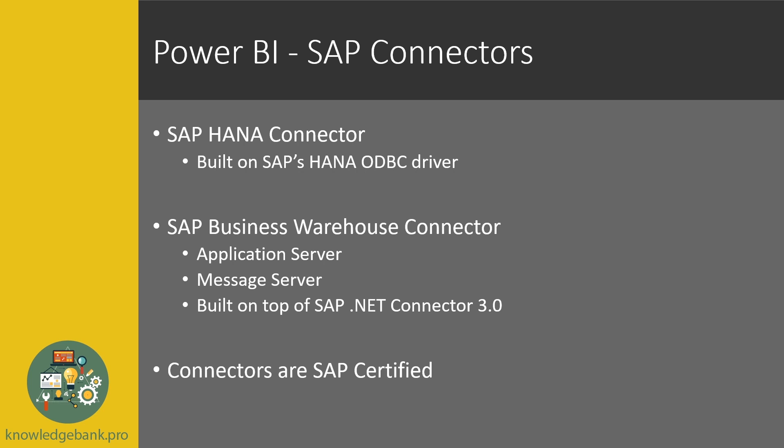In terms of connectors, out of the box there are two connectors available in Power BI for SAP: the SAP HANA connector and the SAP BW connector. The HANA connector is built on SAP's HANA ODBC driver, and the BW connector uses SAP's .NET Connector 3.0.